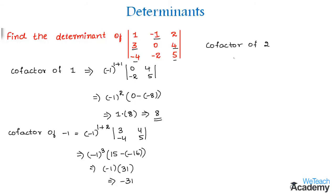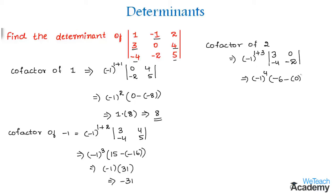The cofactor of element 2 is (-1)^(1+3) into the minor, obtained by deleting the first row and third column, giving the determinant of [3, 0; -4, -2]. That gives (-1)^4 into (3×-2 - 0×-4) = 1 into -6, so the cofactor of element 2 is -6.